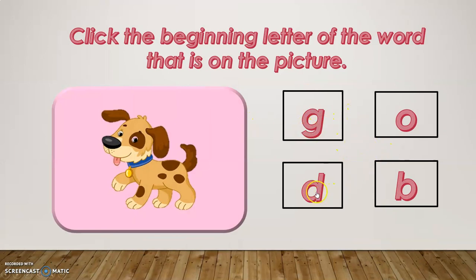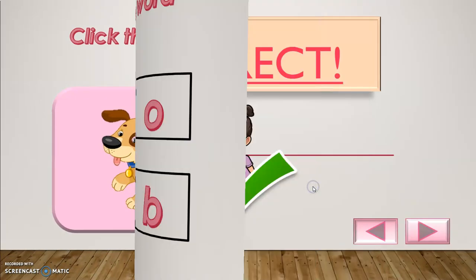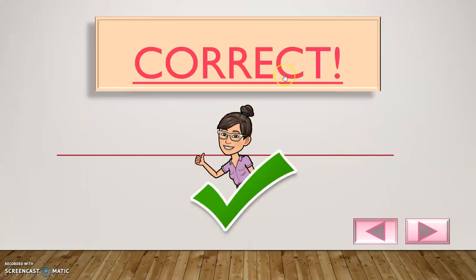So, dapat tama ang sagot niya. Kung tama ang sagot niya, pag-click niya itong tamang sagot, ano mangyayari? Ayan, correct answer na. At pwede na siyang mag-proceed sa next activity. Ipapress niya lang ito, mga command button dyan, pwede na siyang mag-number 2.